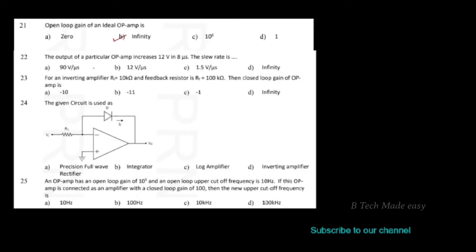Next question: the output of a particular op-amp increases 12 volts in 8 microseconds. Then the slew rate is — slew rate has units of volts per microsecond. So we have 12 divided by 8, which equals 1.5 volts per microsecond. That is the slew rate of that op-amp.